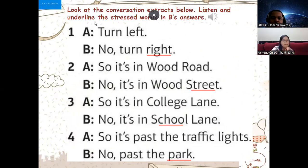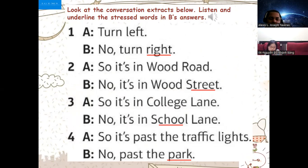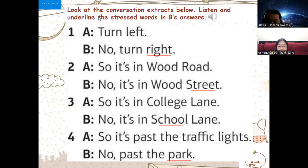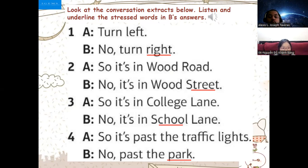Okay, keep on here please. Now you and I are going to have this conversation. I'm going to start as A and you're going to be B, then we're going to change our roles. Turn right — turn left? No, turn right. So it's in Wood Road? No, it's in Wood Street. So it's in College Lane? No, it's in School Lane. I'm going to be B, you're going to be A.